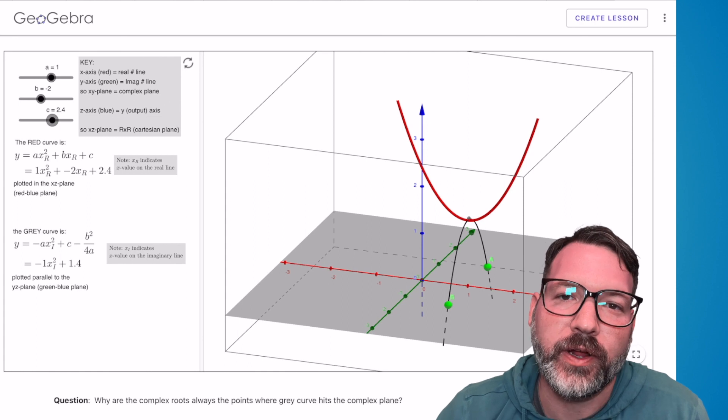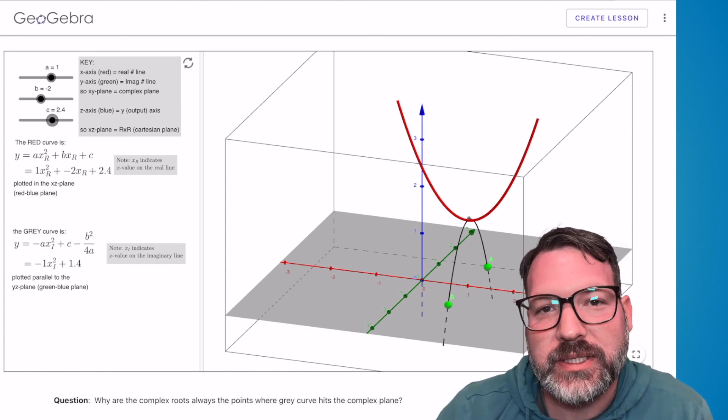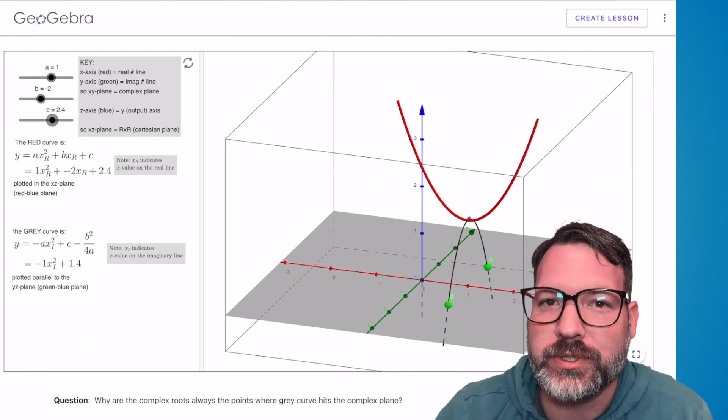And so there you have it, that's your fundamental theorem of algebra. The degree of a polynomial is going to tell you how many solutions to expect, it's just that those solutions aren't always real solutions.